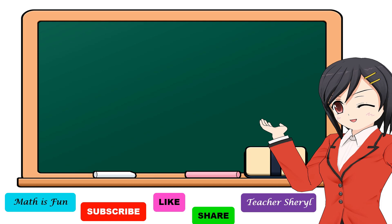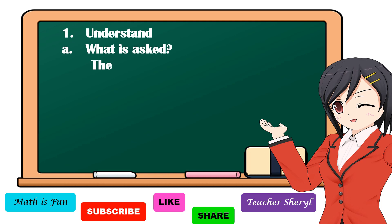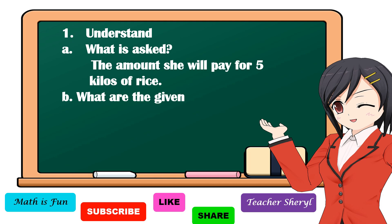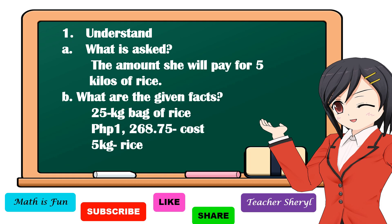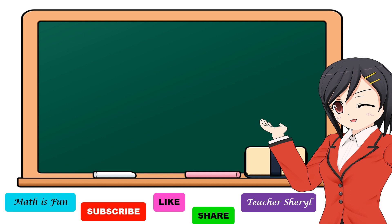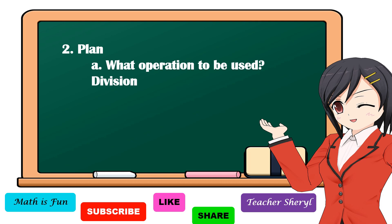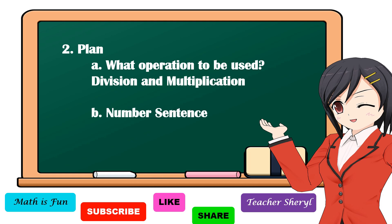To solve our problem, first we're going to understand what is asked — it is asking for the amount she will pay for 5 kilos of rice. The given facts are: a 25-kilogram bag of rice costs 1,268 pesos and 75 centavos, and she buys 5 kilograms. Next, we make a plan. We will use division and multiplication. The number sentence is: 1,268.75 pesos ÷ 25 × 5 = n.